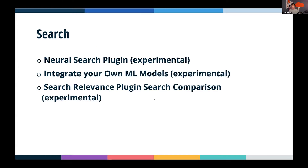We have a bunch of new search features as well, all of which are experimental — this was a big experimental release. We have the neural search plugin, which allows you to get started more readily with semantic search, great for document or product search. That goes alongside the ability to integrate your own ML model, allowing you to import natural language models. Experimental features are behind feature flags that are configuration items.